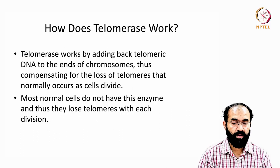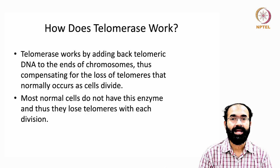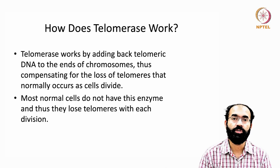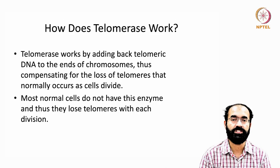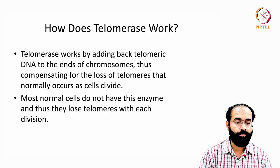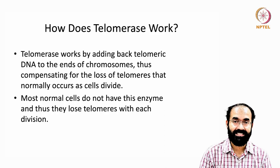How does telomerase work? Telomerase works by adding back to an existing array sequence — it does not start from scratch. The T2HG3 sequence is already there and telomerase keeps renewing it, just like you renew your vehicle insurance or medical insurance. You already have it and you continue to renew it. It keeps adding telomeric DNA to the ends of chromosomes, compensating for the loss of telomeres that normally occurs as cells divide.